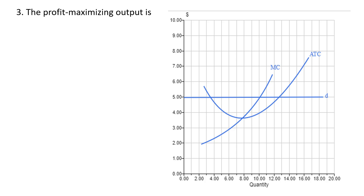The profit-maximizing output: a perfectly competitive firm is going to produce where price equals marginal cost, or marginal revenue equals marginal cost. That's right here at the intersection of the horizontal demand curve and marginal cost. We come down to the quantity axis and find 10 units. The correct answer is A.